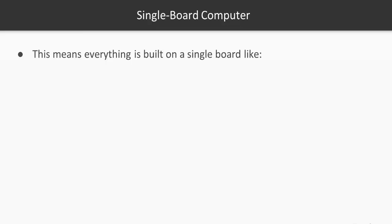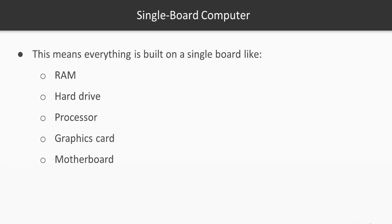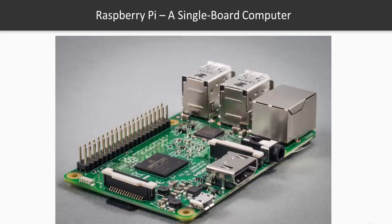Talking about the second thing — that is 'single board computer.' By computer, we usually think of a CPU which has different components like RAM, hard drive, processor, graphics card, motherboard, and a separate power unit. But here in Raspberry Pi, everything is built on a single board. That's why it is known as a single board computer. This was the basic introduction to the Raspberry Pi.